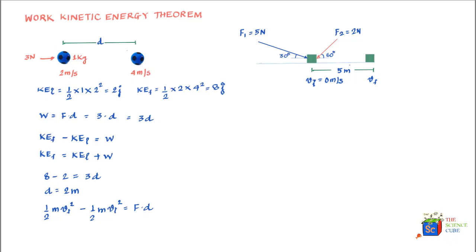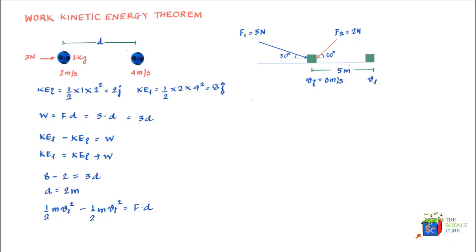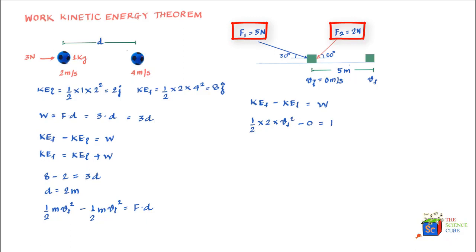Can we apply the work-energy theorem to solve for V_f? Yes, we can. The theorem states KE_final − KE_initial = work done on the mass. KE_final = ½ × 2 × V_f², KE_initial = 0 since the initial velocity is 0, and the total work done is the sum of work by F1 and F2: W = F1 · d + F2 · d, where d = 5 meters.